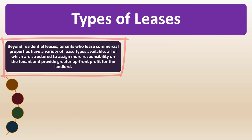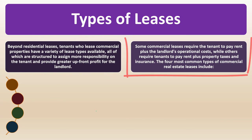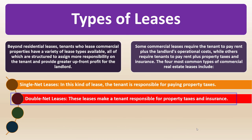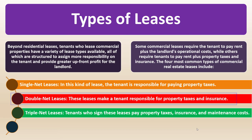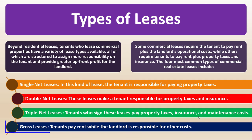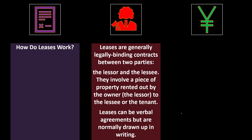Types of leases: beyond residential leases, tenants who lease commercial properties have a variety of lease types, all structured to assign more responsibility to the tenant and provide greater upfront profit for the landlord. The four most common types of commercial real estate leases are: single net leases, where the tenant pays property taxes; double net leases, where the tenant pays property taxes and insurance; triple net leases, where tenants pay property taxes, insurance, and maintenance costs; and gross leases, where tenants pay rent while the landlord covers other costs.